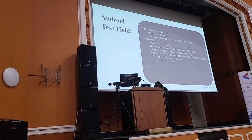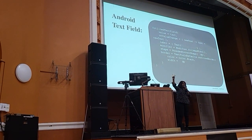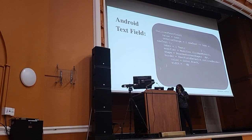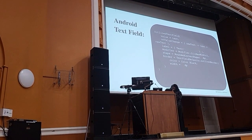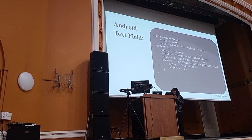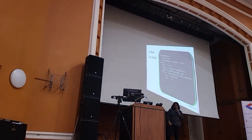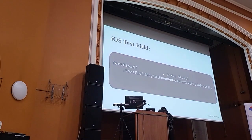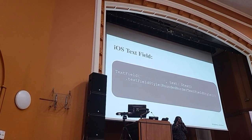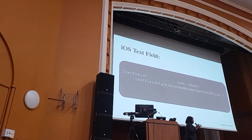Another very important component used in Android is the OutlinedTextField. Everybody here has logged into somewhere — you enter a username and password. That's how it's built. You have the value, you listen when the value changes with onValueChange, you have the label, and then your Modifier. Now look at the iOS equivalent — pretty similar.